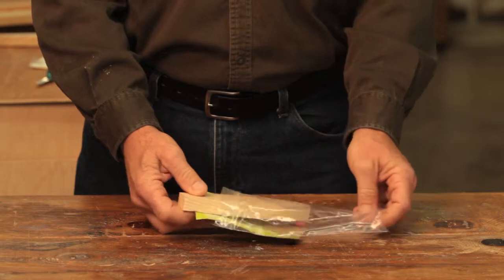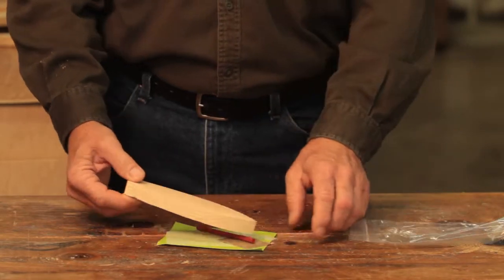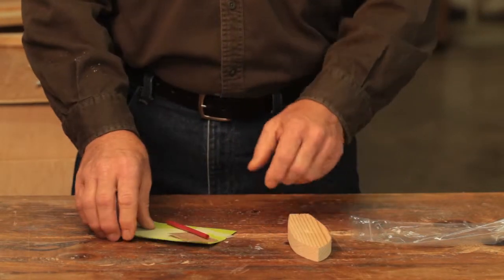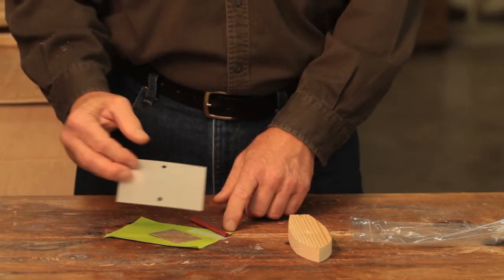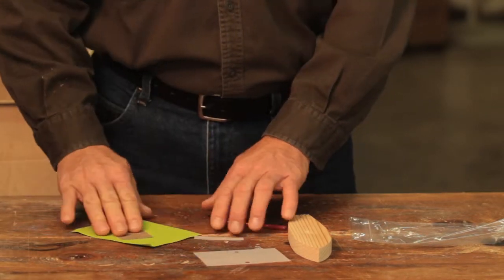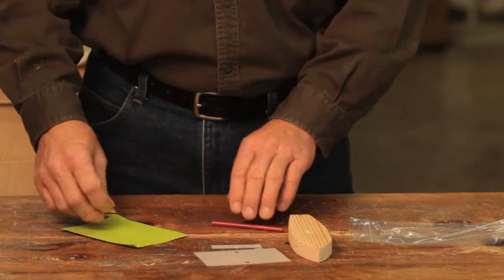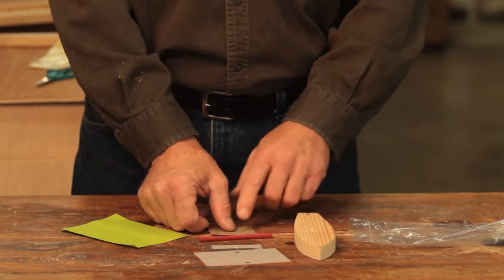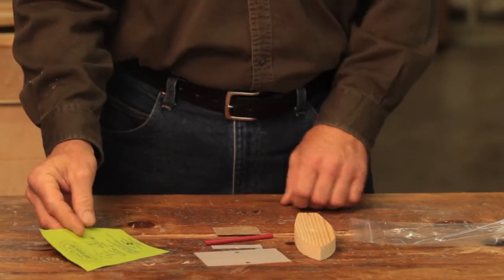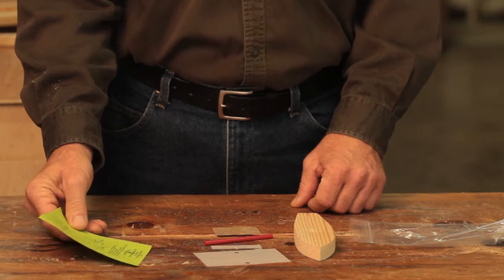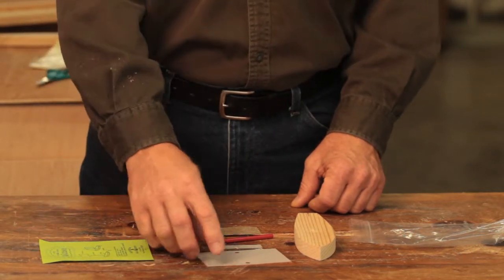First thing you want to do is pull all the parts out and lay them out so you can make sure you have them all. Again, there's the hull, the sail, the rudder, the mast, and some sandpaper. Keep that instruction sheet nearby so you can keep an eye on how things will need to go together.